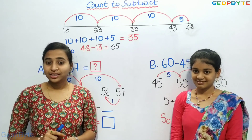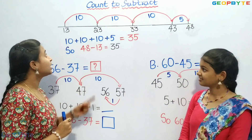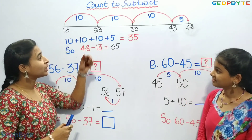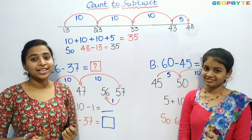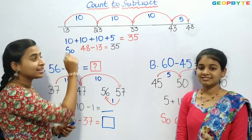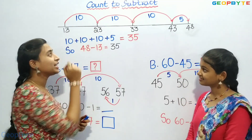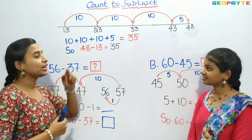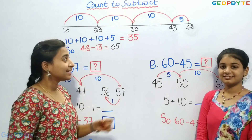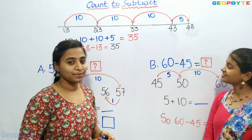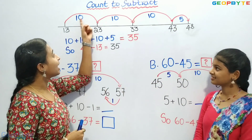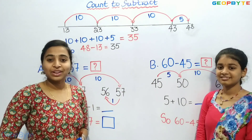We can subtract this by counting forward from the number 13. If we count in the jumps of 10, it is much easier. From 13, if we jump 10, we get to 23. 13 plus 10 is equal to 23. 23 plus 10 is 33. 33 plus 10 is 43. 43 plus 5 is 48. So if we add these numbers, we will get the answer.